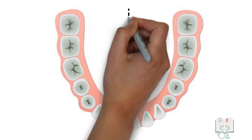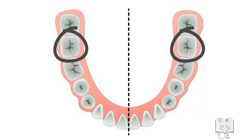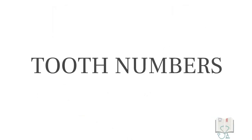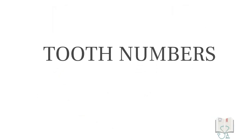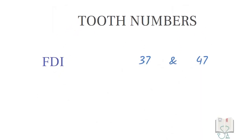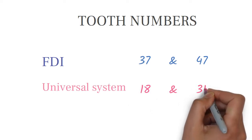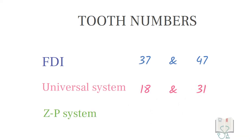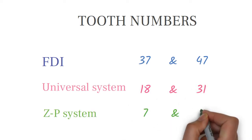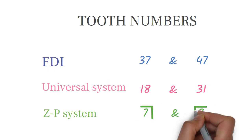The permanent mandibular second molar is the seventh tooth from the midline. Its tooth number in the FDI system is 37 and 47. In the Universal system it is 18 and 31, and in the Zsigmondy-Palmer system it is 7 with appropriate coordinate brackets.